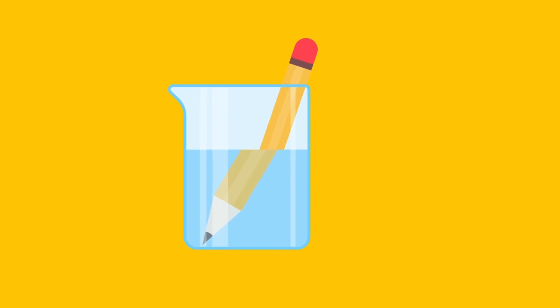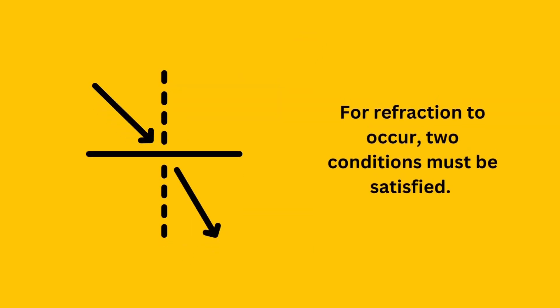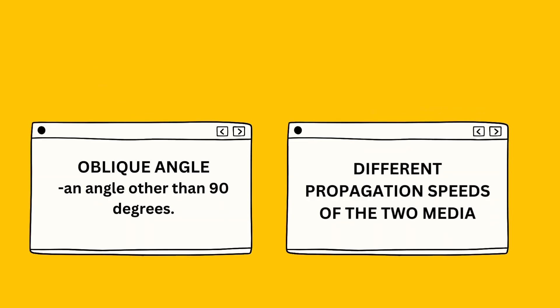Similarly, in ultrasound imaging, sound waves can bend or change direction when they encounter boundaries between two tissues or mediums with different acoustic properties. However, for refraction to occur, two specific conditions must be satisfied. Firstly, the sound waves must strike the boundary at an oblique angle, meaning that they approach the boundary at an angle other than perpendicular or 90 degrees. Secondly, the two mediums on either side of the boundary must have different propagation speeds. When these conditions are met, refraction occurs, causing the sound waves to bend or change direction at the boundary between the two mediums.